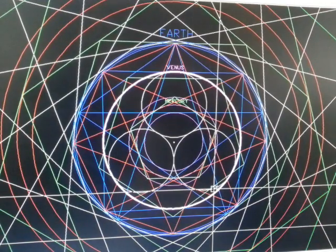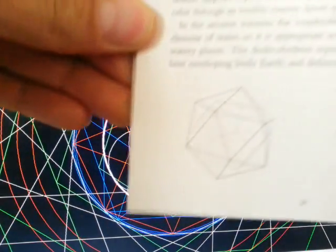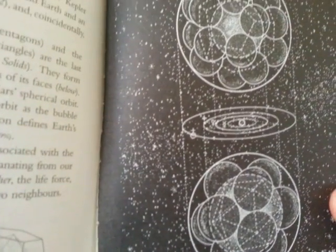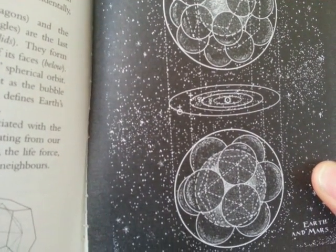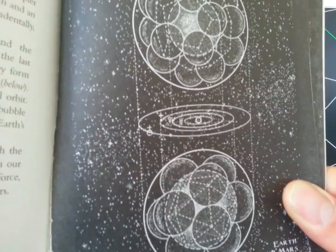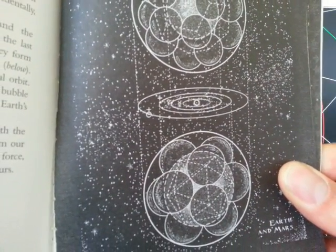Such as in Martineau's book here, find the orbits of Earth and Mars, sorry, to be a dodecahedron icosahedron.